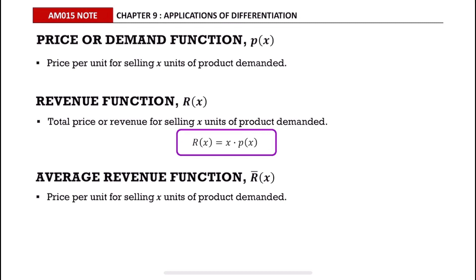The revenue function equals x multiplied by p(x), where x is the number of products and p(x) is the price or demand function. The average revenue function is denoted as R̄(x) — it is the price per unit for selling x units of product demanded.